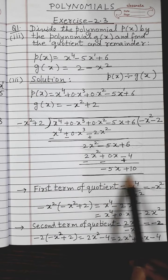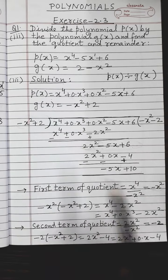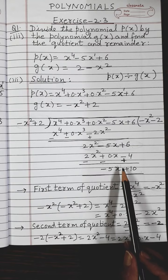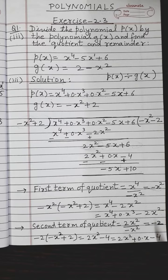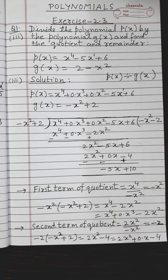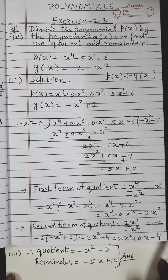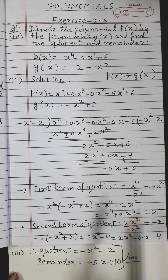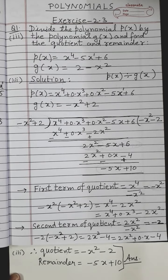So minus 5x plus 10 is your remainder. The degree of the remainder is 1 and the degree of the divisor is 2. Whenever the degree of the remainder becomes less than the degree of the divisor, your division process is complete. Therefore, quotient equals minus x square minus 2 and remainder equals minus 5x plus 10. I hope children this question is clear to you. Bye-bye.